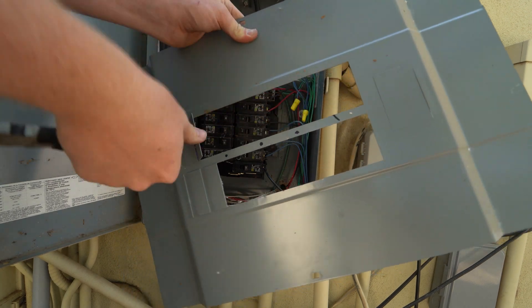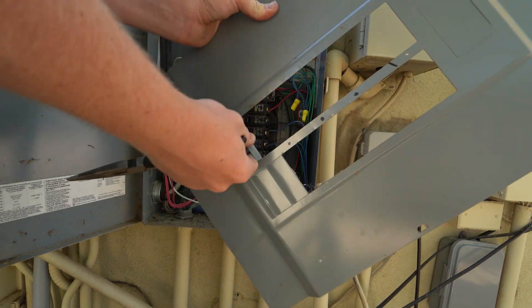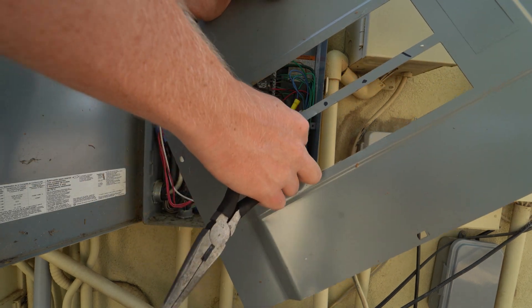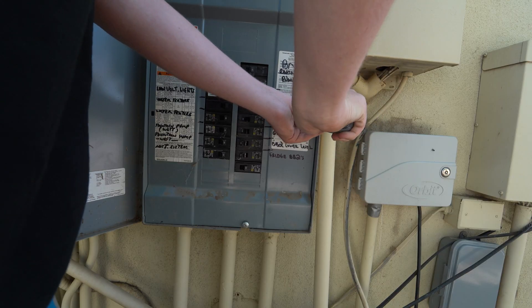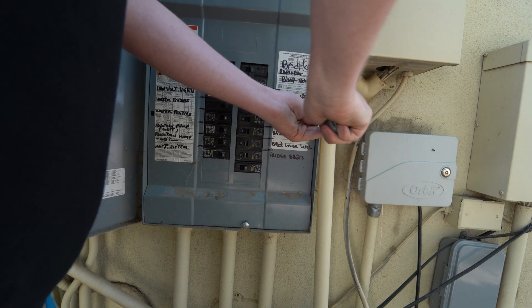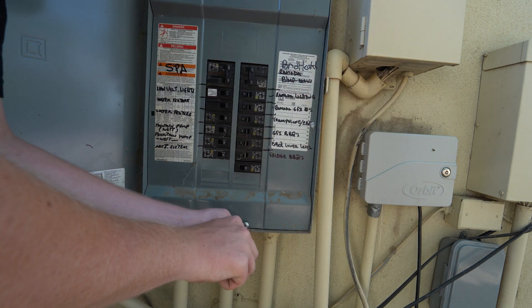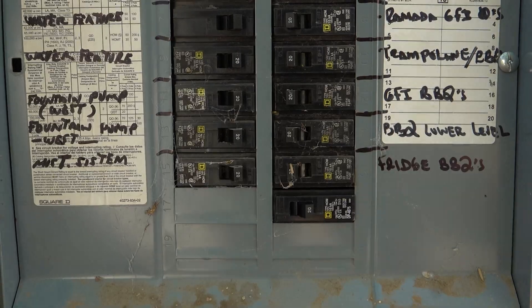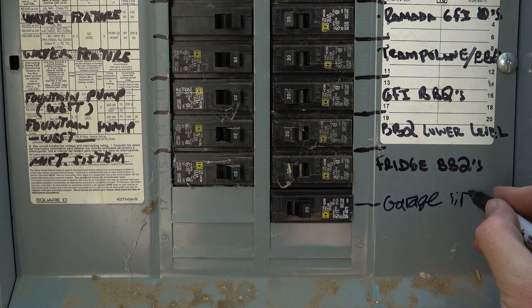On the front cover, make sure to remove the tab so that it fits over the new breaker. Reinstall the cover and make sure the screws are tight. It's definitely a smart idea to label the new breaker. Shut the panel door and make sure the main power is on.